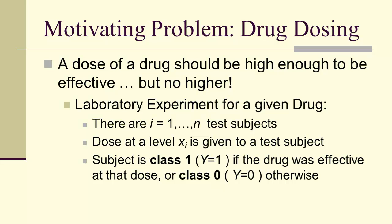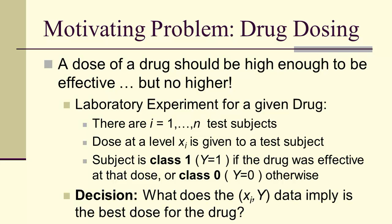And x sub i here is the value of the feature x for the i-th subject. And the subject is class 1 if the drug was effective at that dose, or class 0 otherwise.